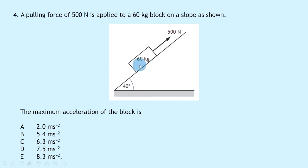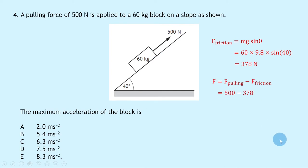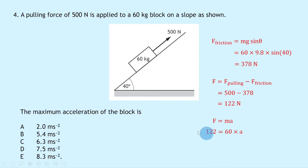We calculate the force parallel to the slope using F = mg sin θ = 60 × 9.8 × sin 40° = 378 newtons. The unbalanced force is 500 − 378 = 122 newtons. Using F = ma, we have 122 = 60 × a, giving a = 2.0 m/s², which is option A.